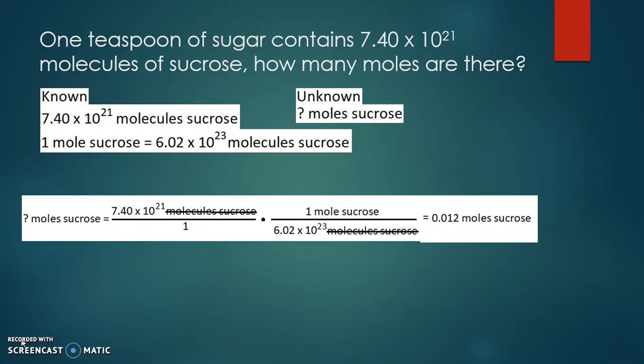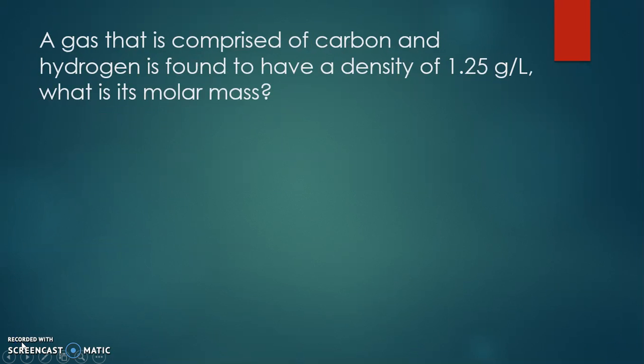Molecules cancel out, leaving us with moles. Dividing 7.4 times 10 to the 21st by 6.02 times 10 to the 23rd, we find there are 0.012 moles of sucrose in that one teaspoon of sugar.